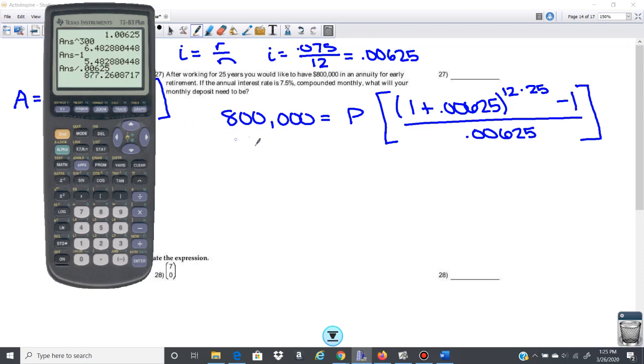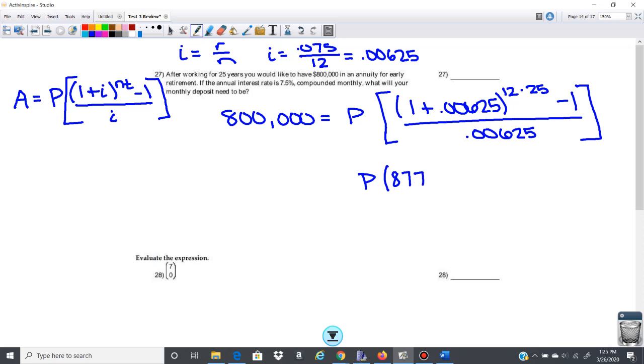So that's going to give me this number here. So we're going to have 877.26 dot dot dot, because I'm not going to round.